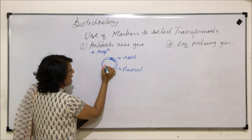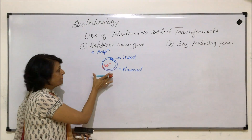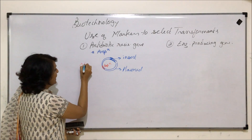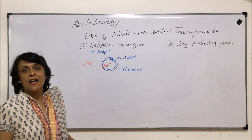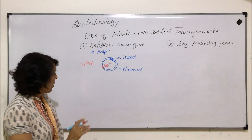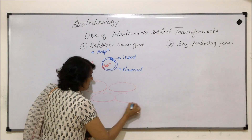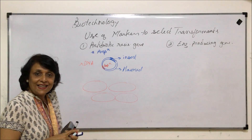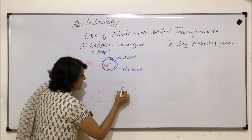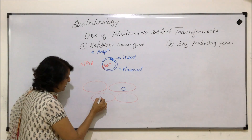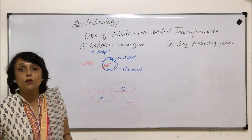In this plasmid — say this is PBR322 — here is the ampicillin resistance gene. If we introduce this R-DNA into the host, we want to check whether this R-DNA has gone in or not. These are our E. coli, and we introduce these R-DNAs into them. This E. coli received R-DNA, this one received it, and the other two did not. This is what we want to check.